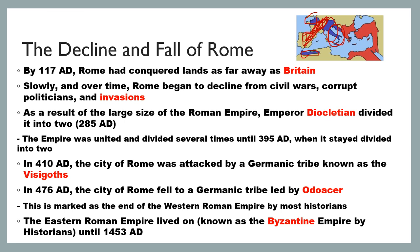Eastern Rome stayed intact and, though it lost land over time, it lasted until 1453 AD. That became known as the Byzantine Empire. Everyone who lived there would have considered themselves Roman — it was the Eastern Roman Empire even though the West had fallen — and we'll pick back up with them later when we talk about the medieval world.